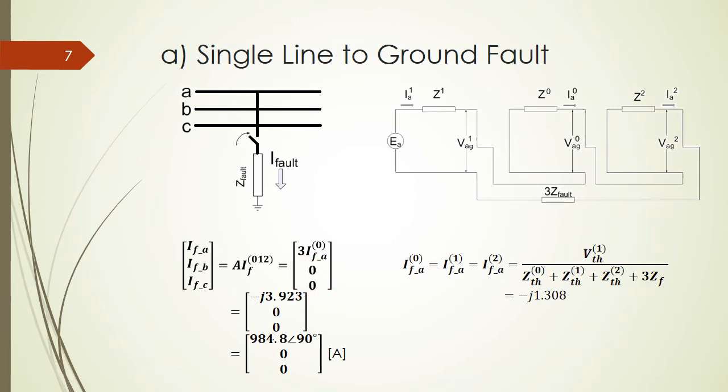So for the single line-to-ground fault, if we multiply the PU value of IA by the base current, we can obtain the actual fault current value.